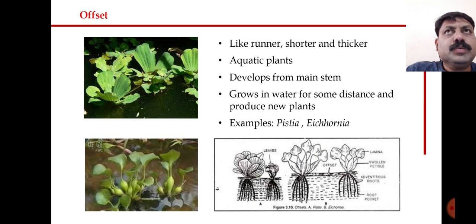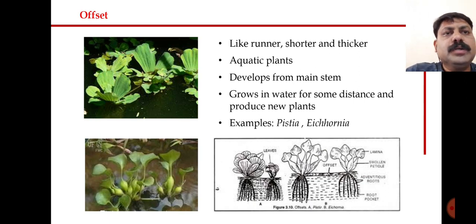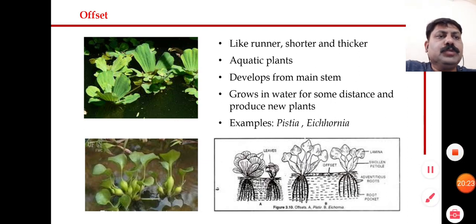So, these are all the methods of natural vegetative propagation: runner, sucker, bulbs, tuber, corm, stolon, and offset. All of these are methods of vegetative propagation where naturally growing modified parts of the plant are used in propagation.